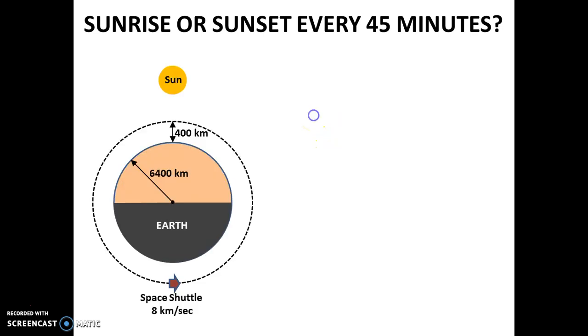How is that? You can see in this figure, this is the Earth having a radius of about 6400 km. And this is the space shuttle orbiting around the Earth at a speed which is very high, 8 km in a second. At a distance of about 400 km above the Earth.